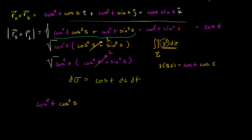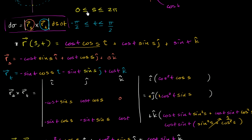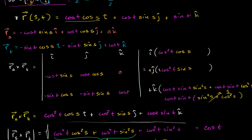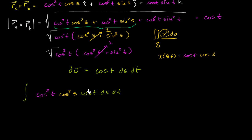Then you have d-sigma, which contributes another cosine of t, giving us cosine squared t times cosine squared s times cosine of t ds dt. This becomes a double integral with respect to the two parameters. The boundaries are straightforward: s goes between 0 and 2 pi, and t goes between negative pi over 2 and positive pi over 2. We integrate with respect to s first, then t.